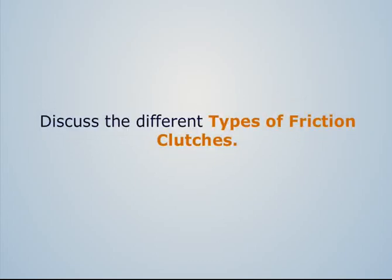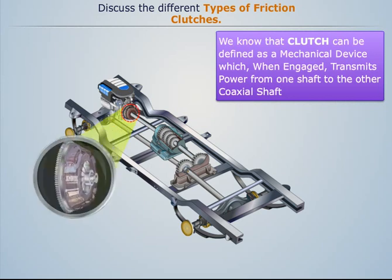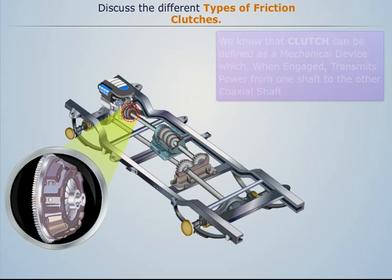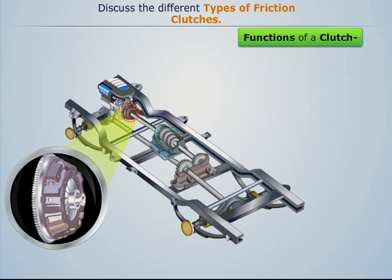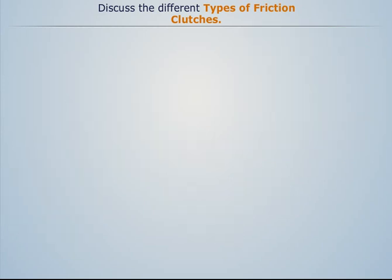Let us discuss the different types of friction clutches. A clutch can be defined as a mechanical device which, when engaged, transmits power from one shaft to the other coaxial shaft. The clutch is also responsible for various functions. Now let us discuss the different types of clutches in brief.